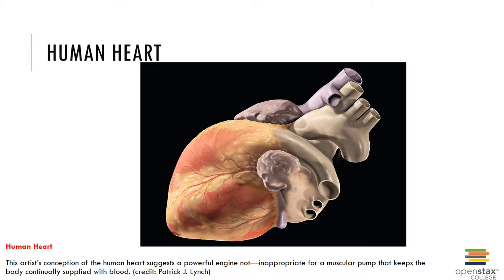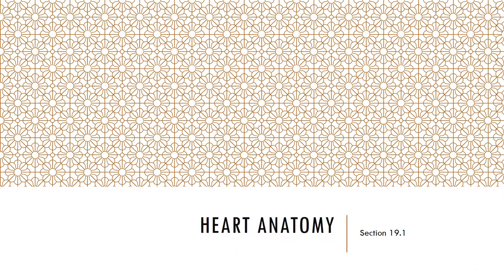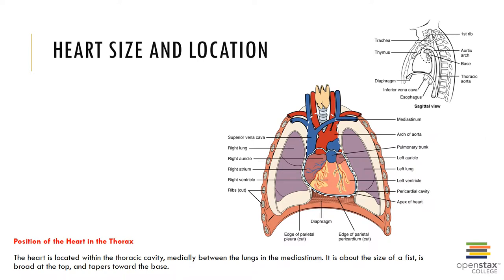A typical adult heart measures approximately five inches from the base to the apex. A mid-sagittal section through the trunk does not divide the heart into two equal halves, because the center lies slightly to the left of the midline, with the apex pointed toward the left ribcage and the base pointed toward the right shoulder. The heart is also rotated so that the right atrium and right ventricle dominate the anterior view.